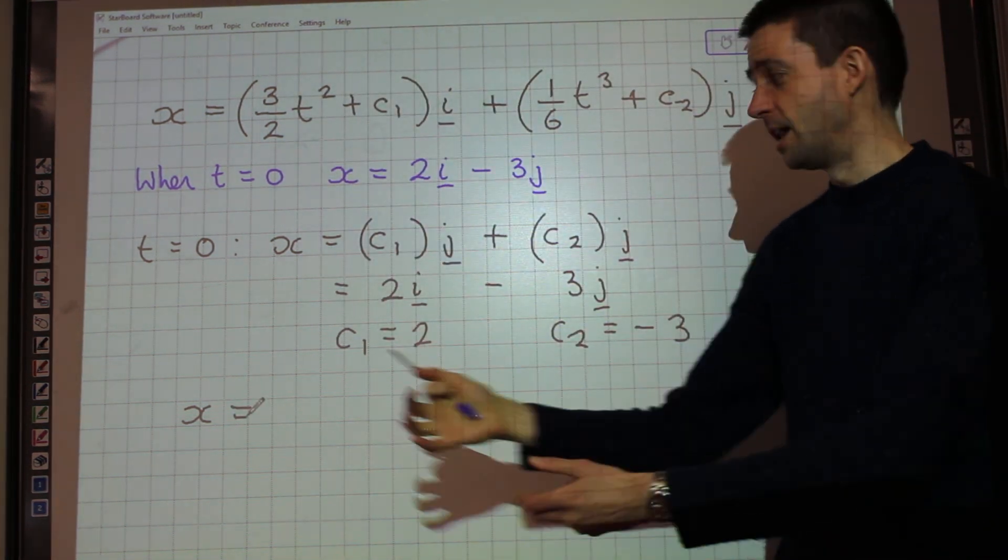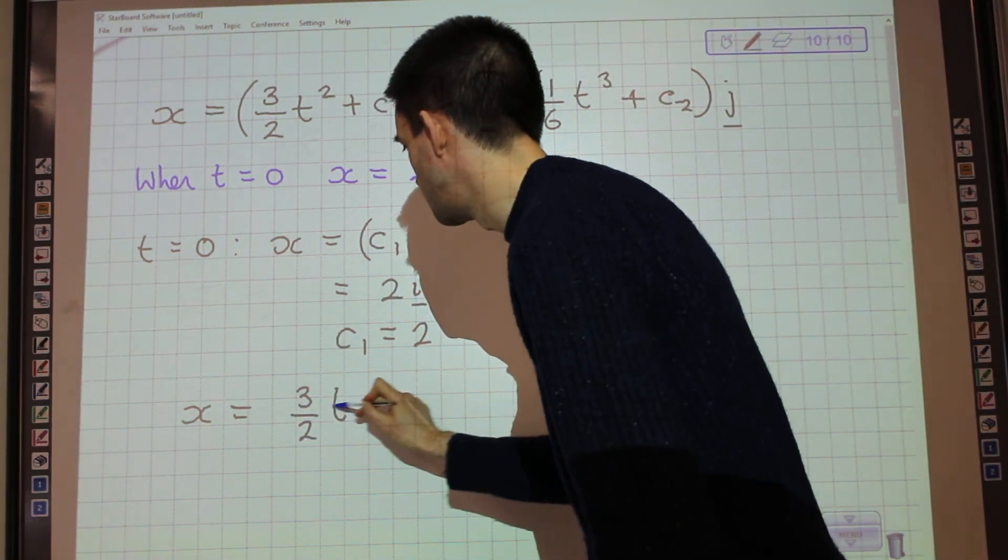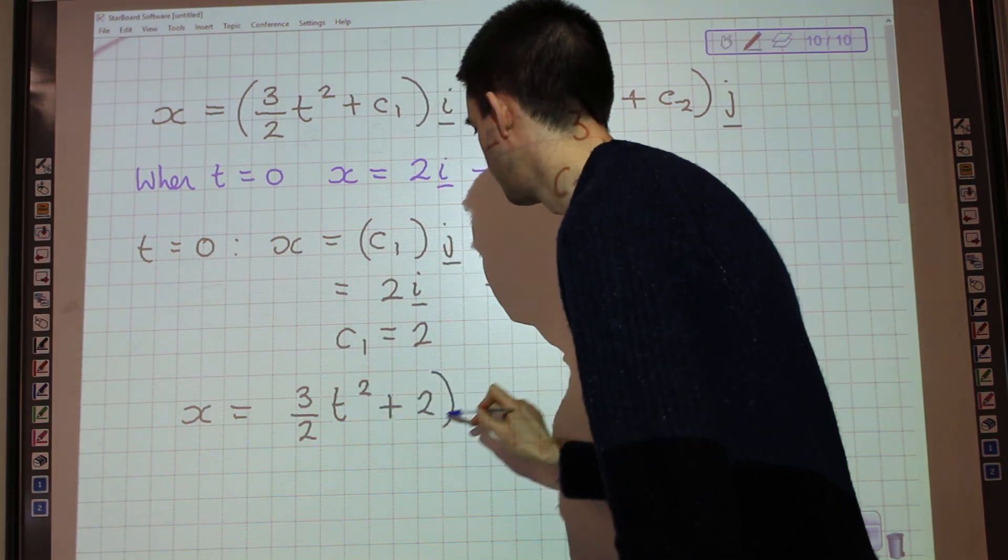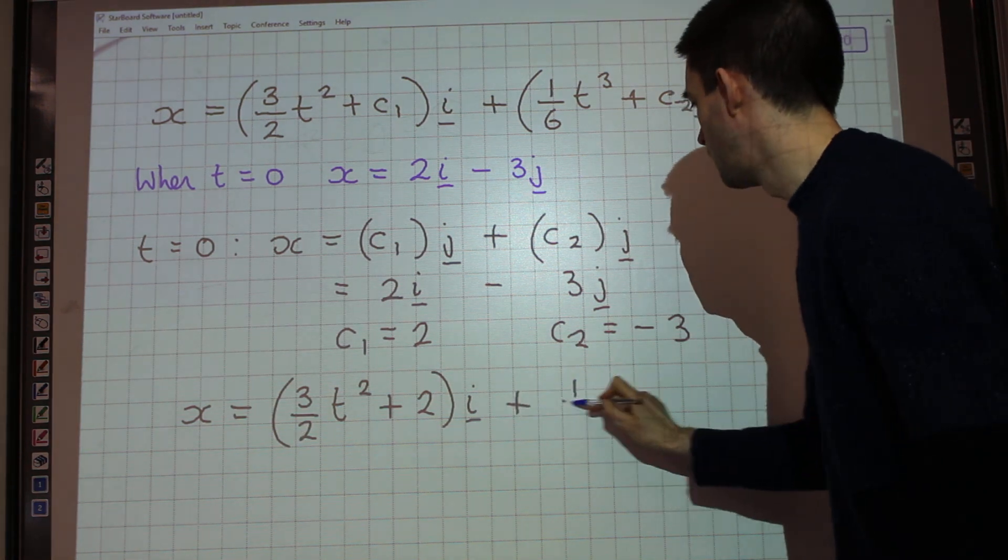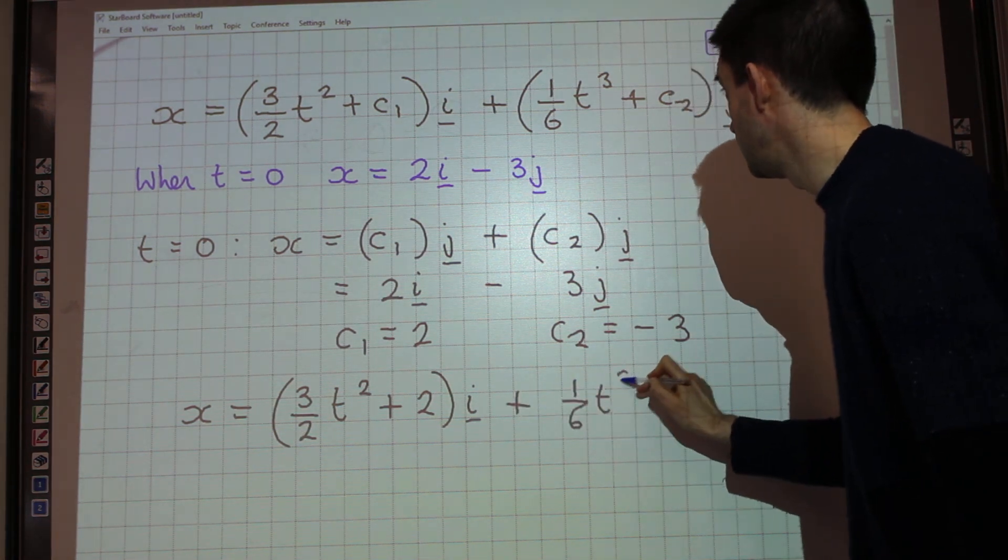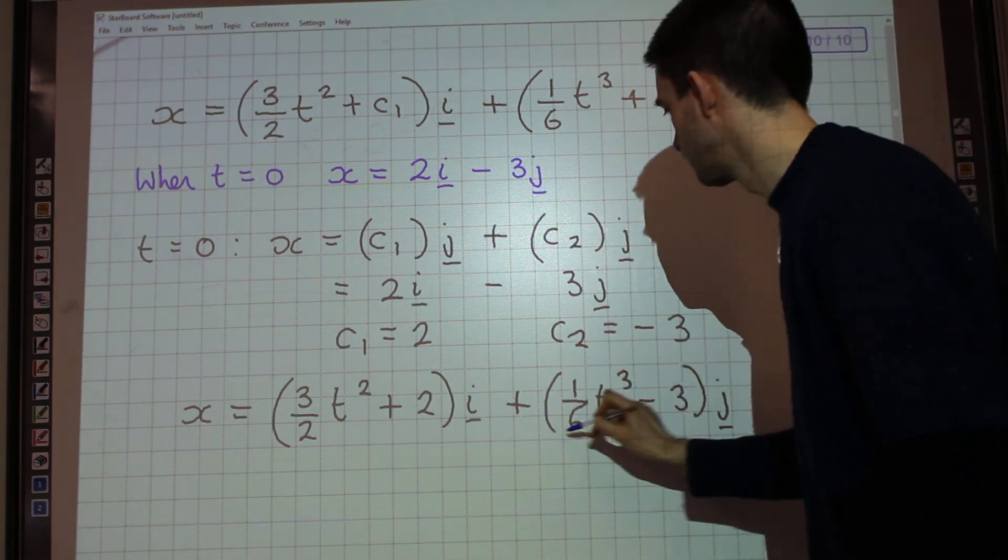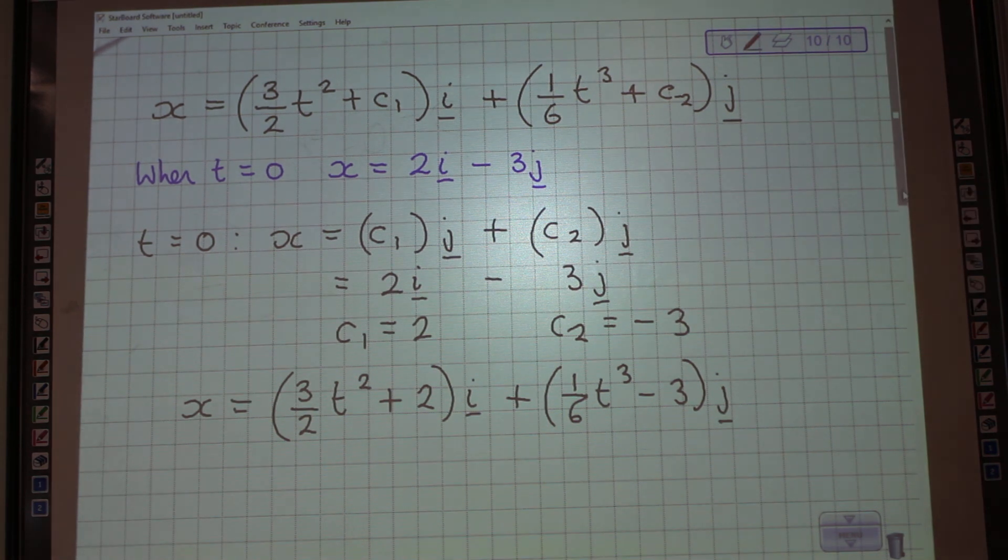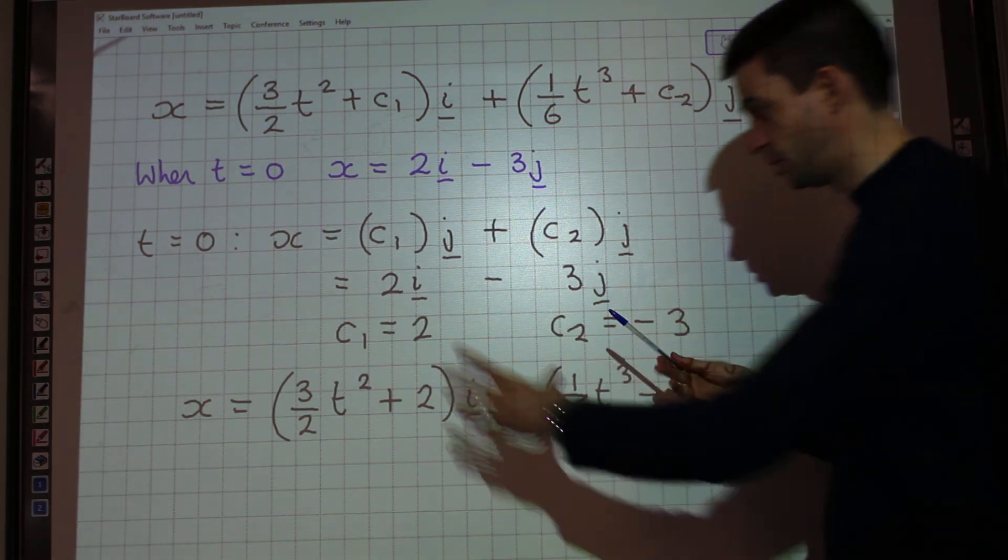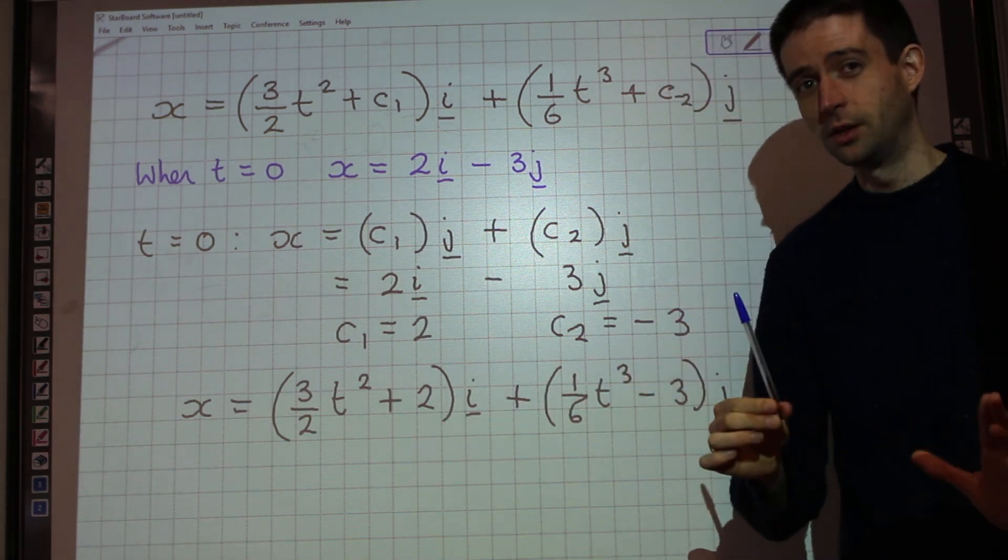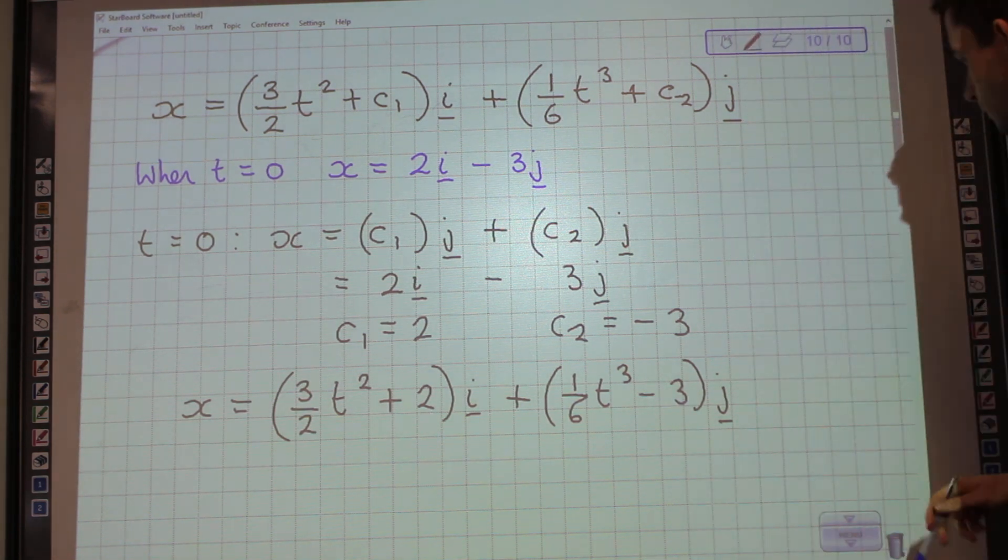So my expression for my position vector at time t is what I got when I integrated with my constants of integration in there. So the i component, I have 3 over 2 t squared plus 2i plus 1 sixth t cubed minus 3j. And if I was to be given a different value of t, I could use that value of t, substitute it into this, and that would tell me the position of where the particle was at that given time.